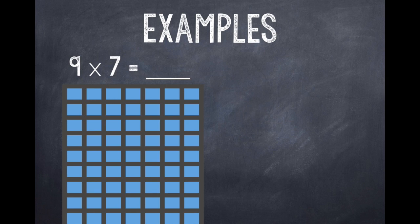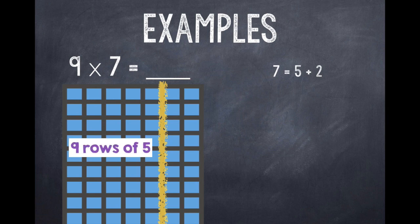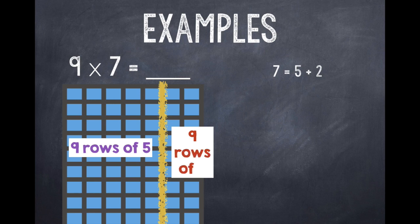Let's try one more example on the back of our page. 9 × 7. So this time in my array, I have 9 rows of 7. And I'm going to break up my 7. I know that 7 is equal to 5 + 2. Because again, I usually try to find 5's or 2's or 3's. Something that's really easy for me to skip count by when I use the distributive property. I draw my line. So now I have 9 rows of 5 and 9 rows of 2.